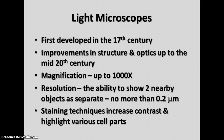Light microscopes were first developed in the 17th century, and there have been improvements in the structure and the optics — the quality of the lenses — up until the mid-20th century. Useful magnification for most light microscopes is up to about 1,000 times, with some reaching up to 1,500 times under special conditions. For most school microscopes, the useful magnification is up to about 1,000 times.